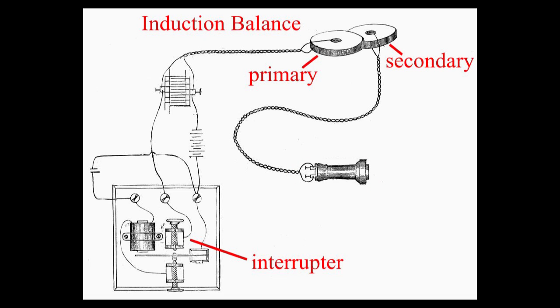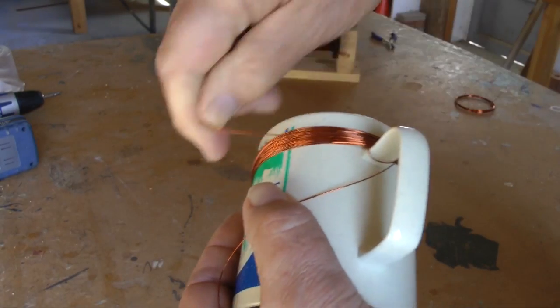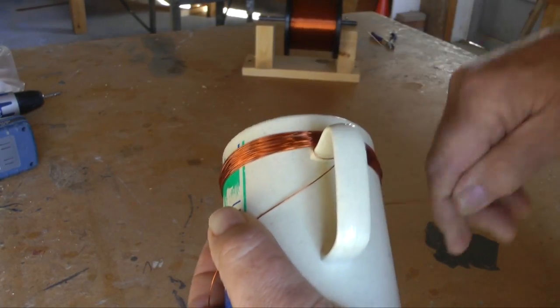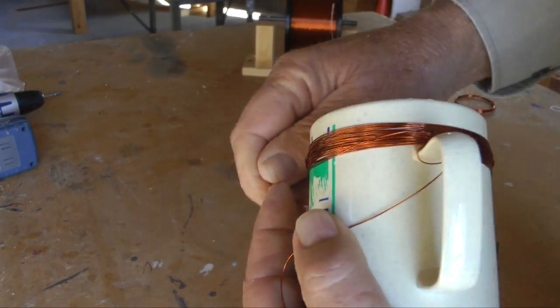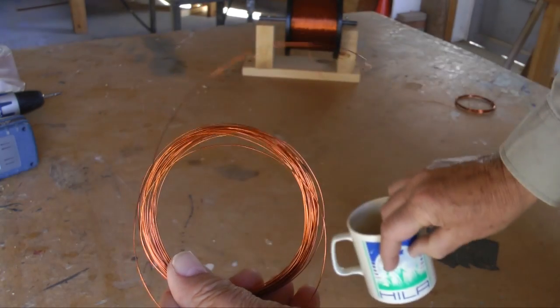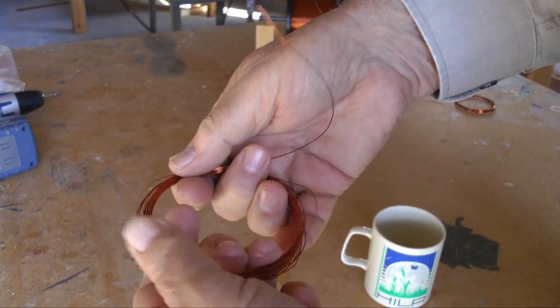Here's how this works. I created two coils by winding 30 turns of 25 gauge enameled wire onto an 8 centimeter diameter cup. The completed coil looks like this.